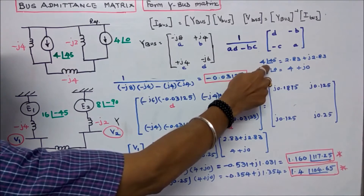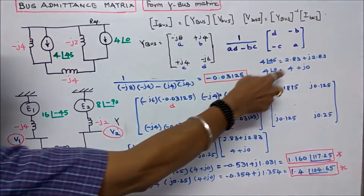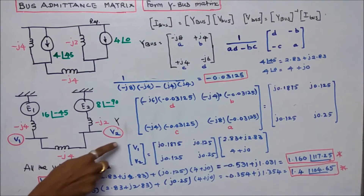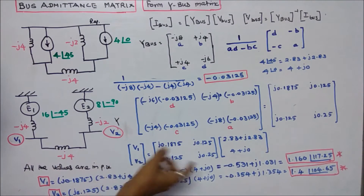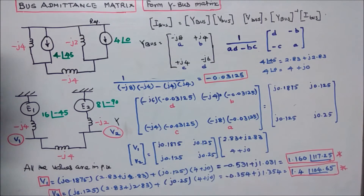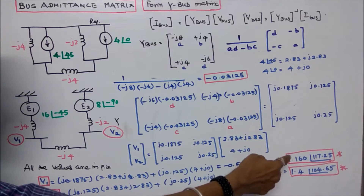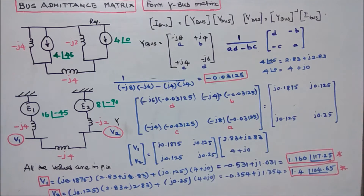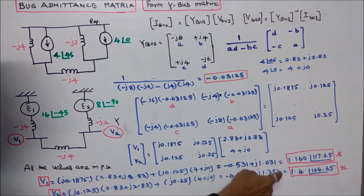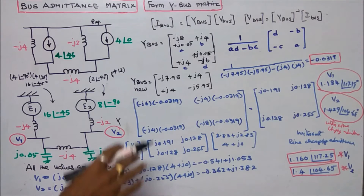Converting the current sources: 4 angle 45 degrees equals 2.83 plus J2.83, and 4 angle 0 degrees equals 4 plus J0. Computing V1 and V2: V1 equals 1.160 angle 117.25 degrees, and V2 equals 1.4 angle 104.65 degrees.